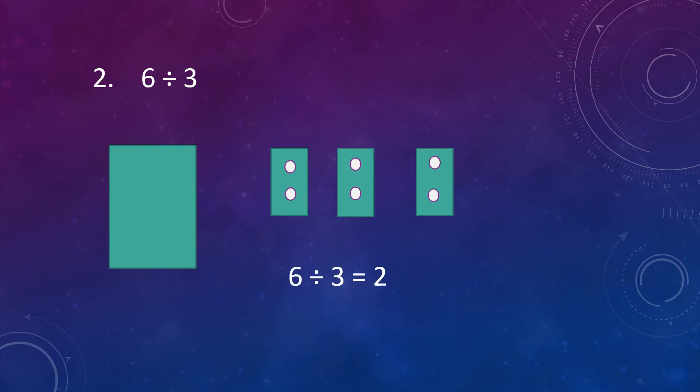So, 6 divided by 3 is equal to 2. This means 3 can be subtracted 2 times from 6.